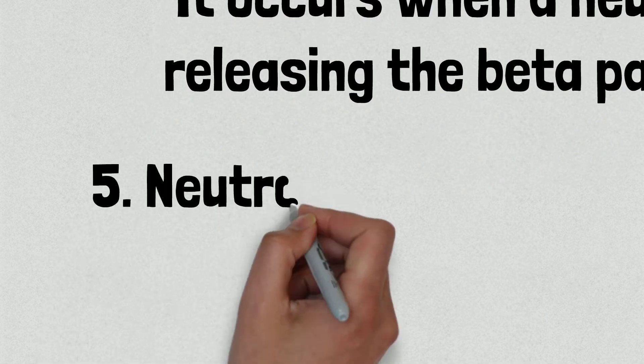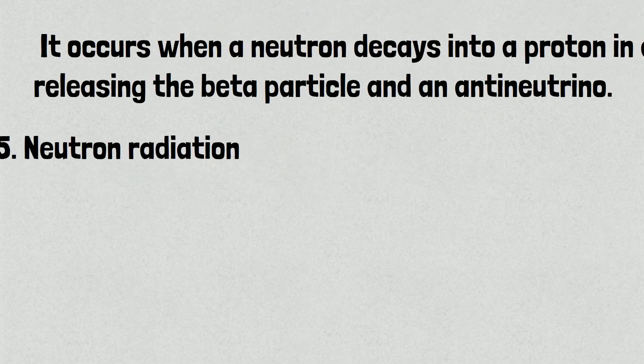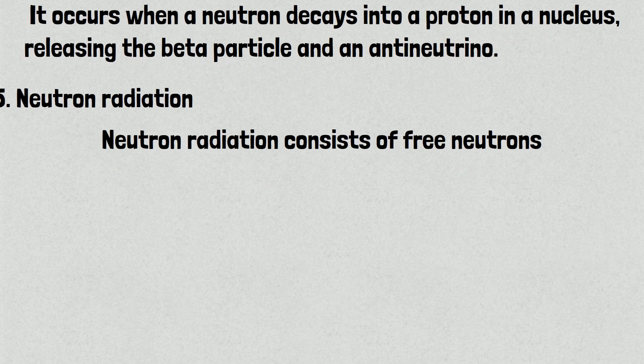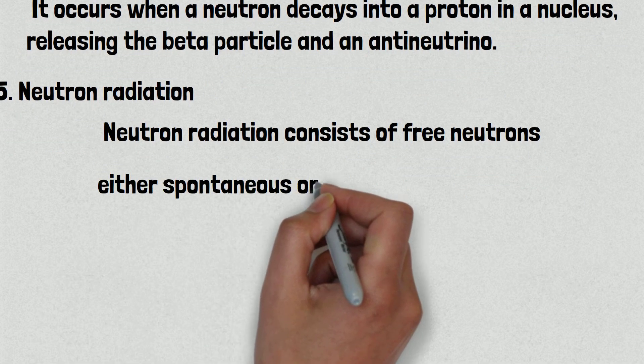Number five is neutron radiation. Neutron radiation consists of free neutrons. These neutrons may be emitted during either spontaneous or induced nuclear fission.